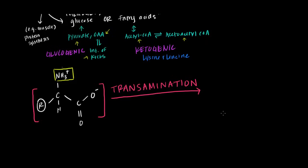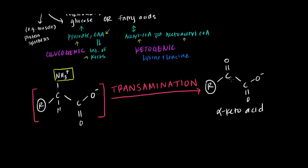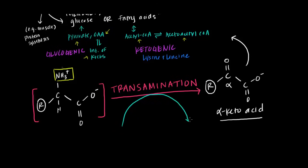After transamination, the carbon backbone becomes an alpha-keto acid — alpha referring to the alpha-carbon relative to the carboxylate ion, keto because it gains a ketone group, and acid because of the carboxylic acid functional group. This alpha-keto acid is the carbon backbone that contributes to all of those metabolic pathways. The common acceptor for the amine group is a molecule called alpha-ketoglutarate, which is an intermediate in the Krebs cycle.